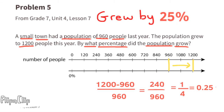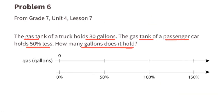We can also use the double number line to verify: 100 percent of the population is 960, 50 percent of 960 is 480, and half of 50 percent is 25 percent while half of 480 is 240. Since the difference between 1,200 and 960 is 240, and 240 is 25 percent of 960, the population grew by 25 percent.